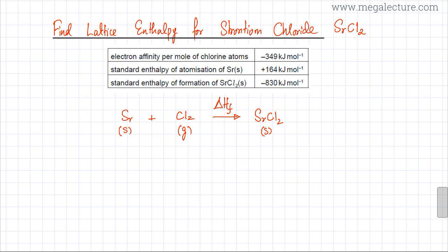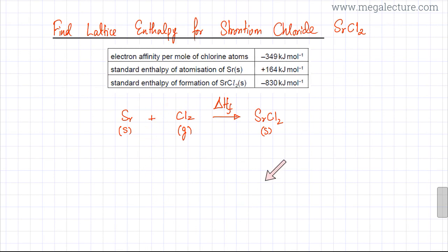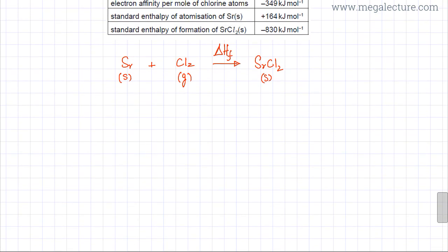To complete the Born-Haber cycle, you have to find another path for forming SrCl₂ from Sr and Cl₂, and write down all the steps. The first step is the atomization of strontium: strontium solid is converted into strontium gaseous atoms, leaving the chlorine molecules unchanged. This step corresponds to the enthalpy of atomization of strontium.